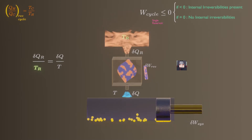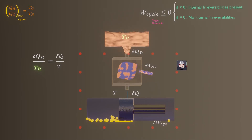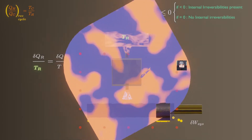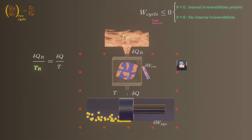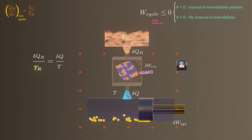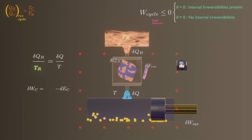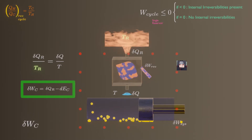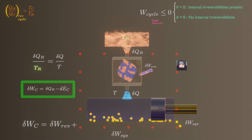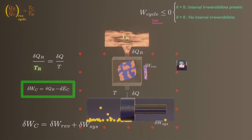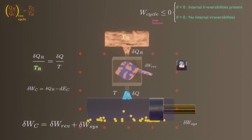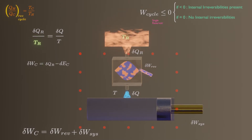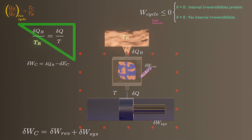Consider next the combined system shown by the dotted line — we combine our old system plus the reversible device to create a new system. If we apply first law energy balance for the combined system, the combined work done equals work done by the reversible process plus the work done by our old system. Then we eliminate the received heat from both equations and solve. From these two preceding relations, it yields a combined expression.